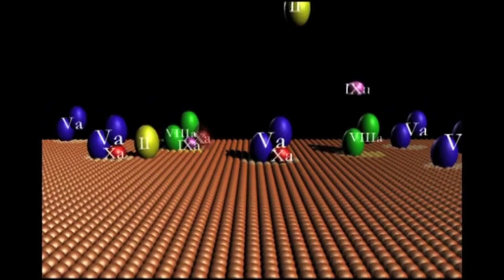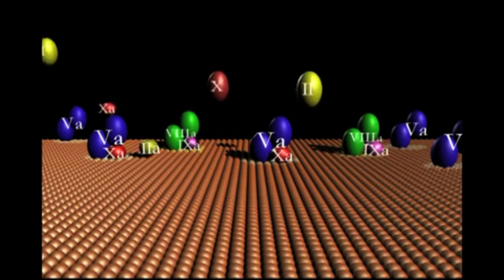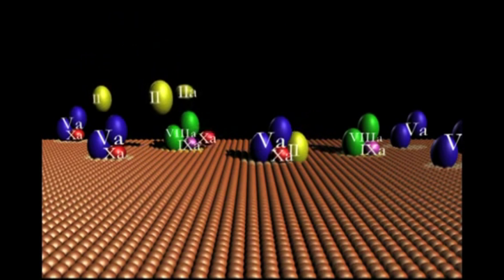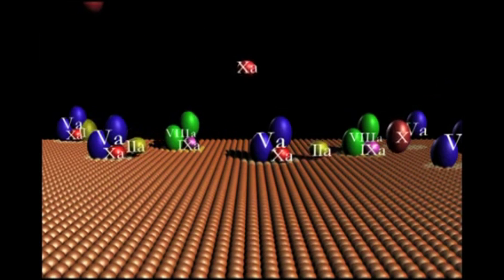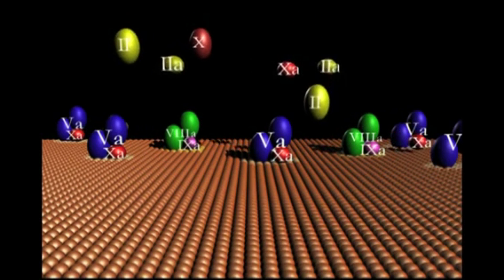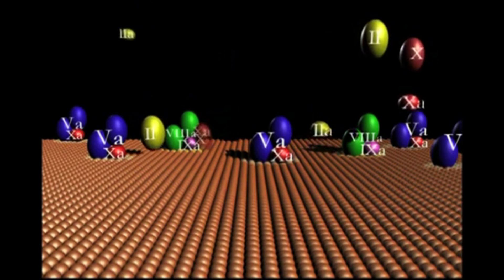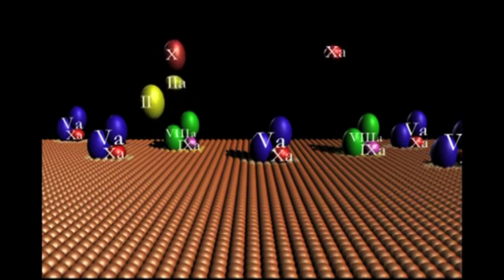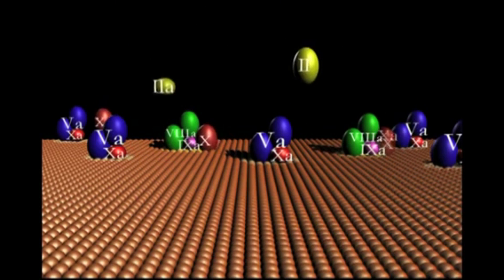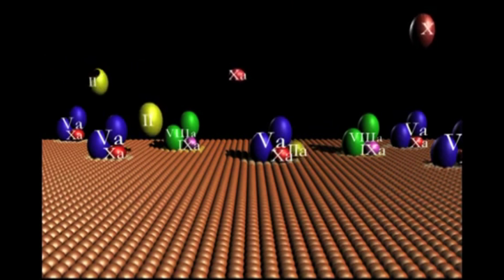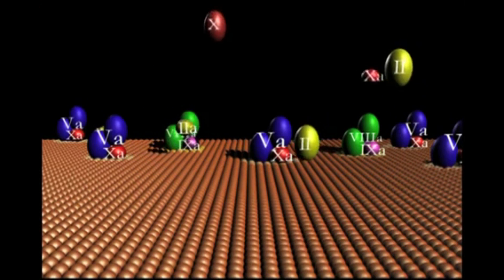When a sufficient stimulus overcomes the synergistic inhibitor threshold, the accumulating mass of activated platelets will support increasing intrinsic factor 10a (8a, 9a) and prothrombinase (5a, 10a) formation on their surfaces at specific platelet receptors and overwhelm the available local inhibitor concentration.